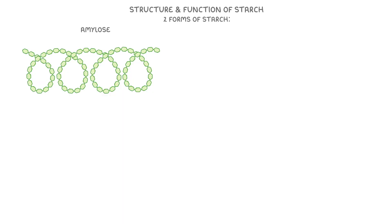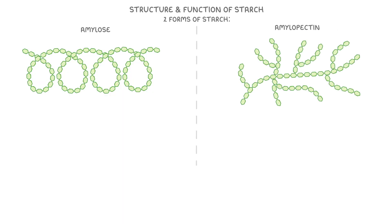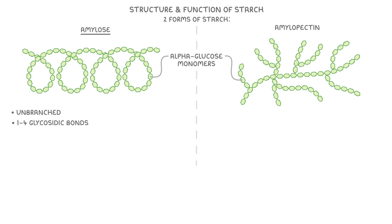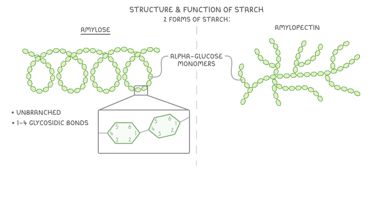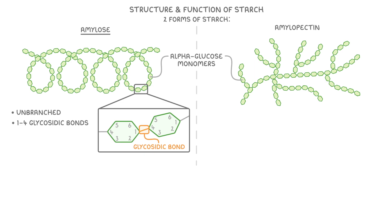Let's go over the structure and function of starch. There are actually two forms of starch: amylose and amylopectin. Both are made from alpha-glucose monomers joined together by glycosidic bonds. Starting with amylose, its structure is unbranched because of the 1,4-glycosidic bonds that form between each of the alpha-glucose molecules. A 1,4-glycosidic bond means the bond forms between carbon 1 and carbon 4. The angle of these bonds means the molecule coils into a helical shape, like a long spiral.